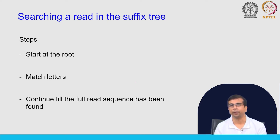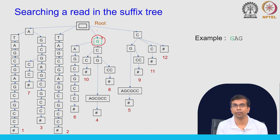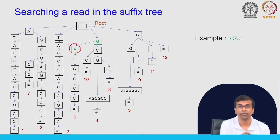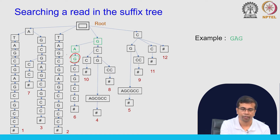We will now see how we can search for reads using the suffix tree structure. The steps are: start at the root and start matching letters from the read, continuing until the full read sequence has been found. Let us take the example of GAG. We start from the root, the first base is G — there is a path from root to G, so we have a match. Next base is A — we match GA. And then the last base G — we have found the full string GAG.